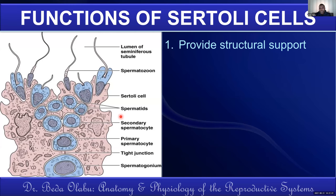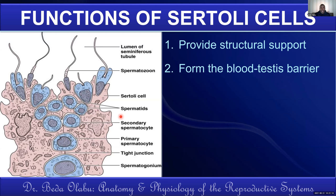The Sertoli cells are the supporting cells of spermatogenesis. They provide structural support to developing sperms, and they establish the blood-testicular barrier, which prevents blood components from reaching the sperms. This is particularly important because sperm cells represent the future generation — a mutation in a sperm could affect a whole lineage. So we need to closely protect the genetic makeup of sperms from blood.